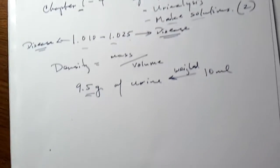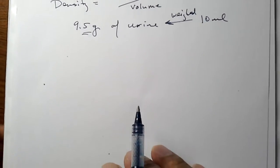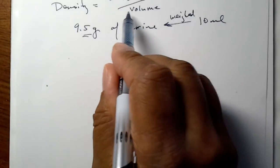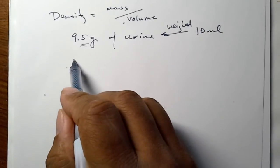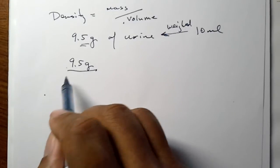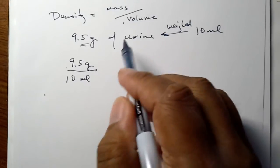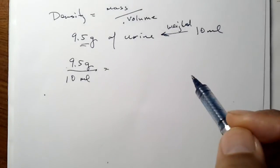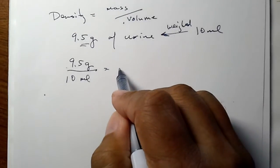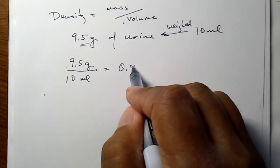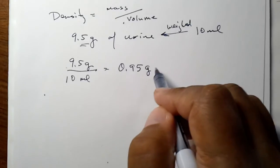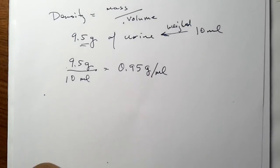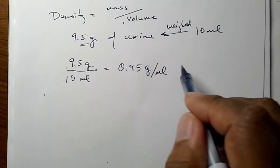And I got 9.5 grams. Alright, so what would be the density of that solution? Well, mass per unit volume means 9.5 grams per 10 mils. And if we do the division, we'll come up with 0.95 grams per milliliter. And that's the density of the urine.